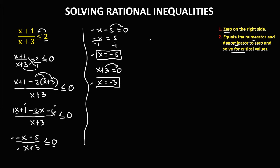Place these critical values on a number line. So we have negative 3 as the first critical value and negative 5 as the second critical value. We also have positive infinity and negative infinity on the number line.